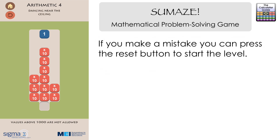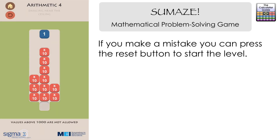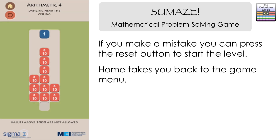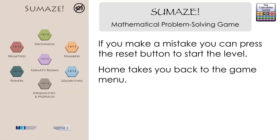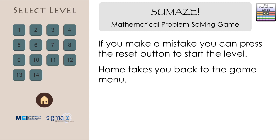On arithmetic level 4, I'm going to show you what happens if you make an error. At the bottom it says values above 1,000 are not allowed — I believe that's true throughout all the levels on SMAZE. If I casually collect three of these multiply-by-10 tiles, you can see I've got 1,000 and can't progress any further to the goal. I've made an error, so I need to press the reset or replay button at the top to go back to the beginning. There's also a home button which takes you back to the game menu. I'll leave that one for you to figure out.